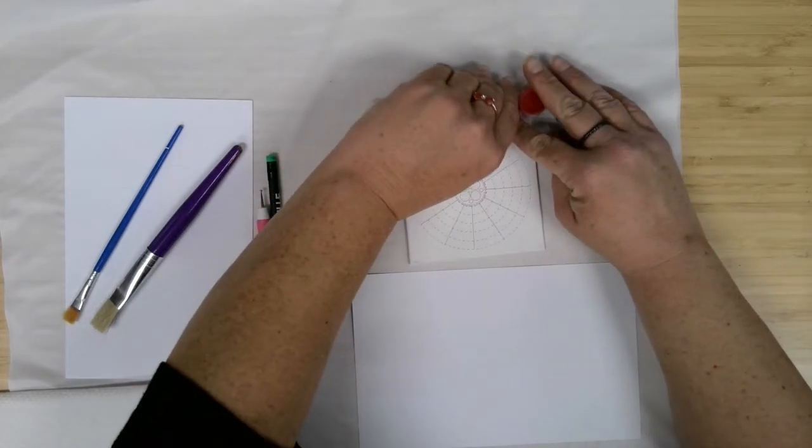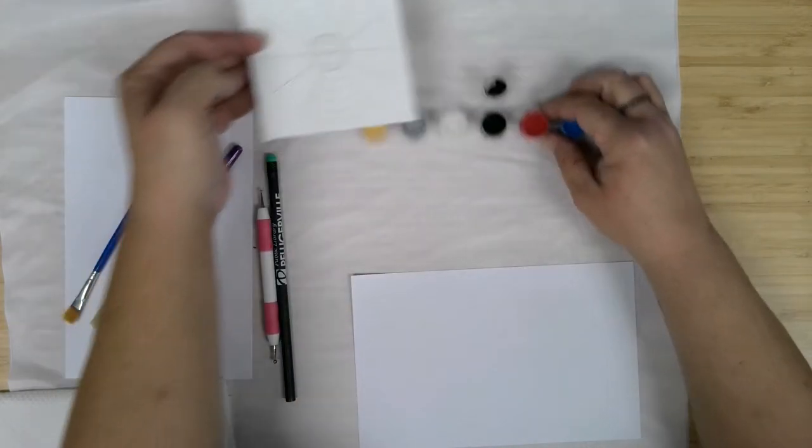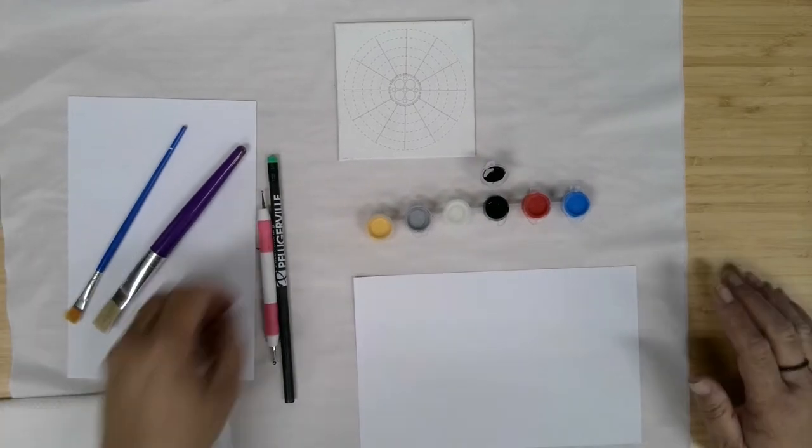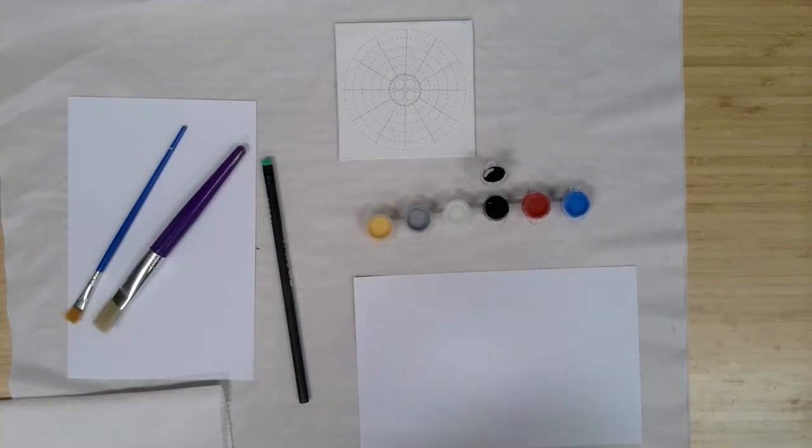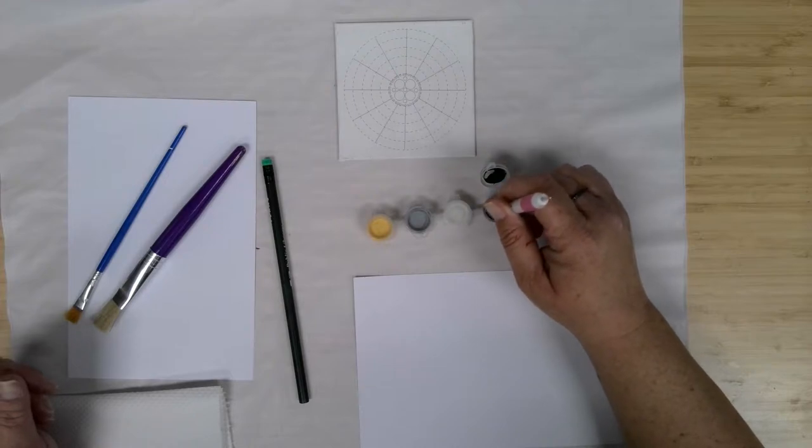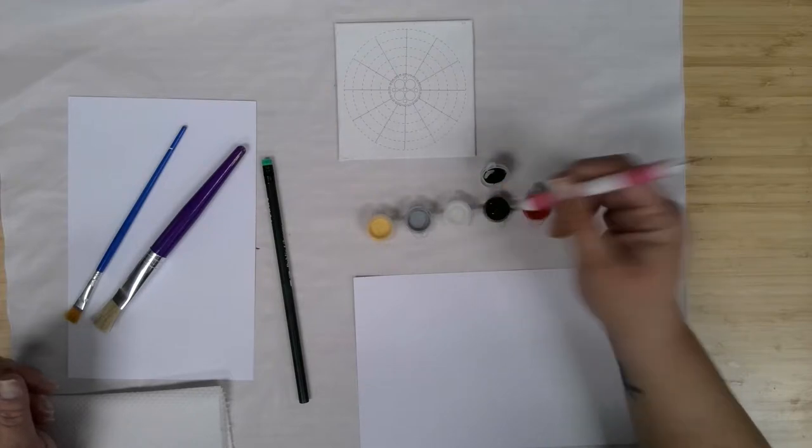So I'm going to go ahead and start with some black, set my canvas on the upside here so that I don't get any paint on it as I get a little bit of paint onto my thumb.